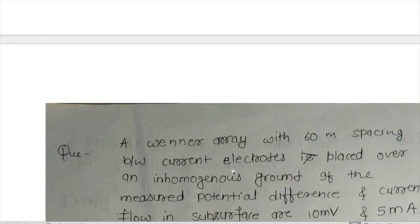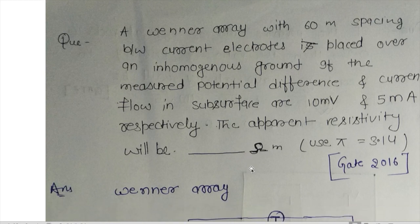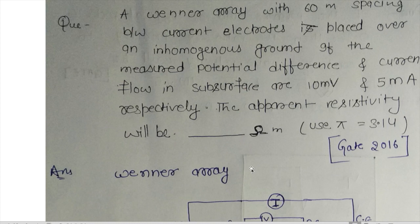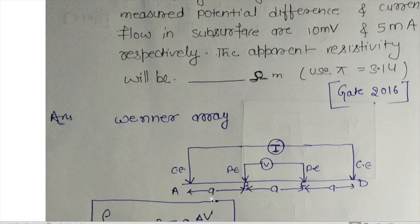Moving to the next question: a Wenner array with 60-meter spacing between current electrodes is placed over an inhomogeneous ground. The measured potential difference and current flow in the subsurface are 10 millivolts and 5 milliamperes respectively. What is the apparent resistivity? The 60 meters is the spacing between the two current electrodes A and D, while P and Q are the potential electrodes — this is the Wenner array, where spacing between each electrode is equal.